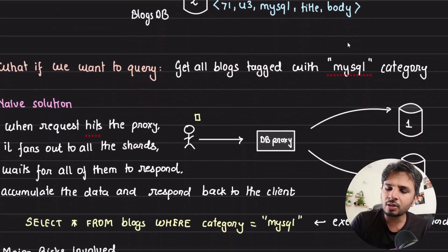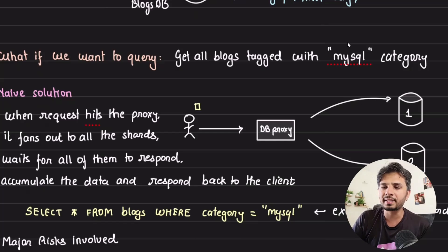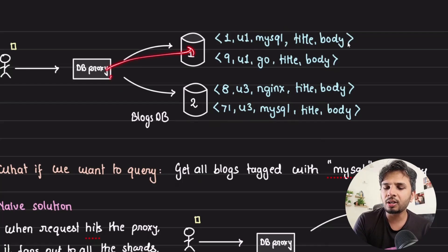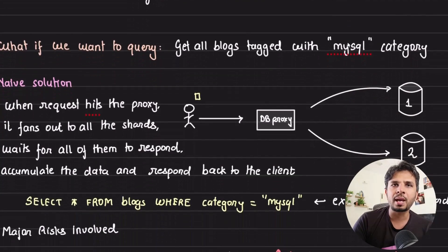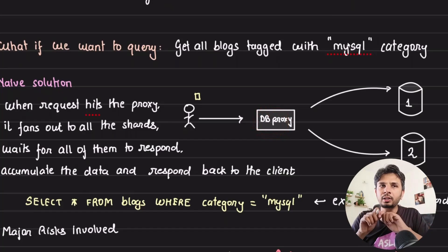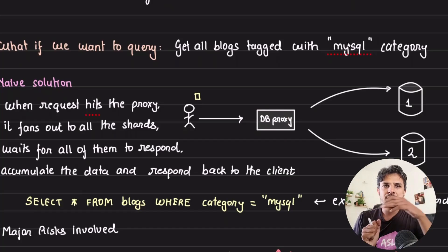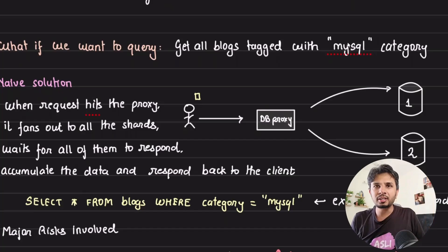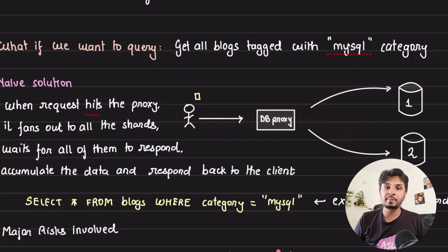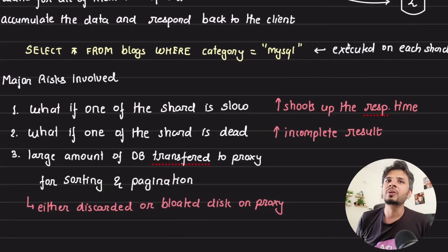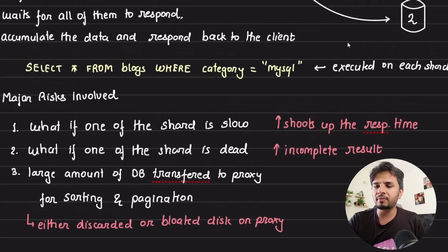The naive solution to get all blogs tagged with a particular category — say MySQL — is to fan out the request to all nodes. We can clearly see that MySQL-tagged blogs exist on both shard one and shard two. When the request hits the database proxy, it fans out to all nodes, fires the query on each, merges the responses, and sends the result back to the user. This is obviously slow.